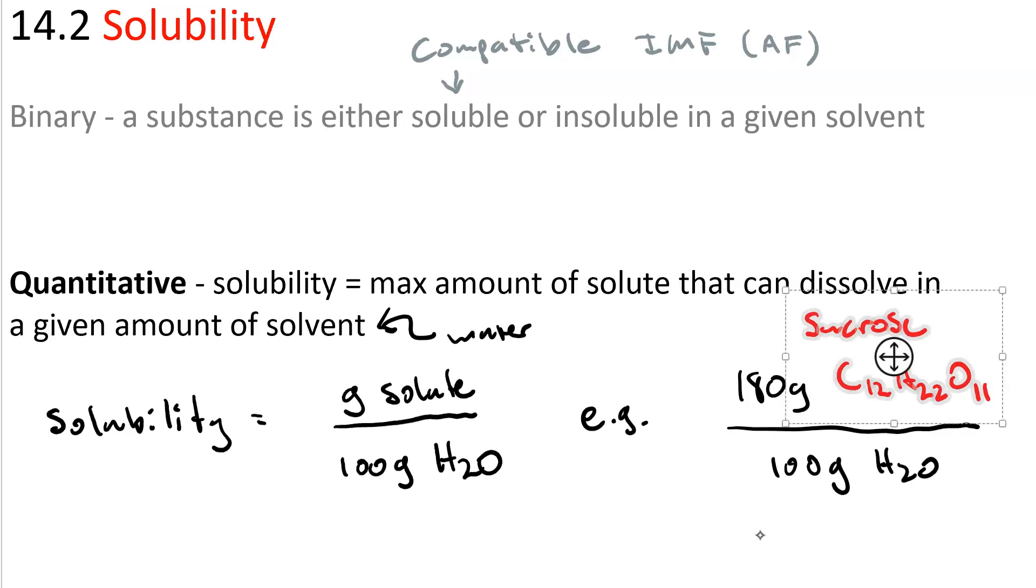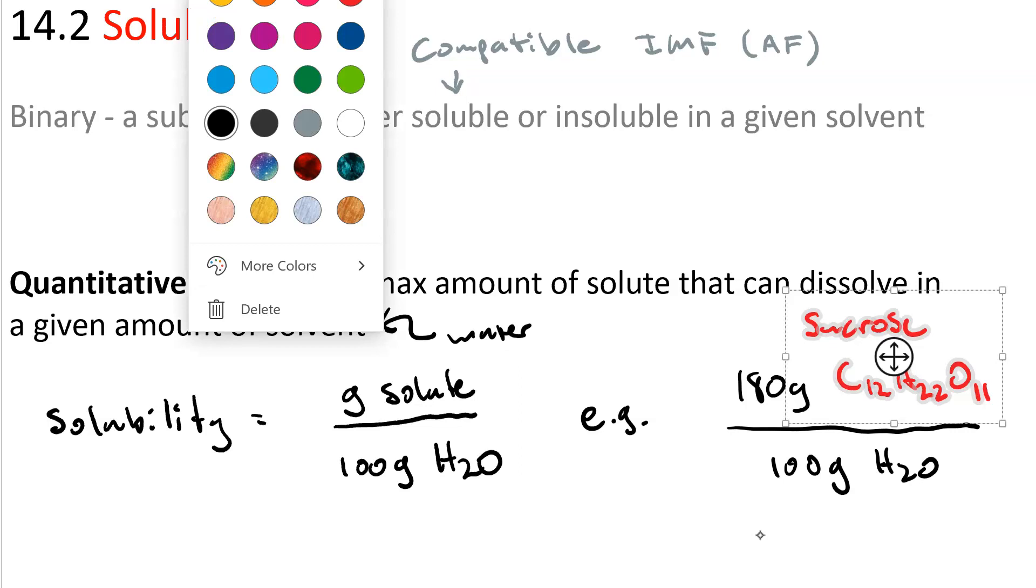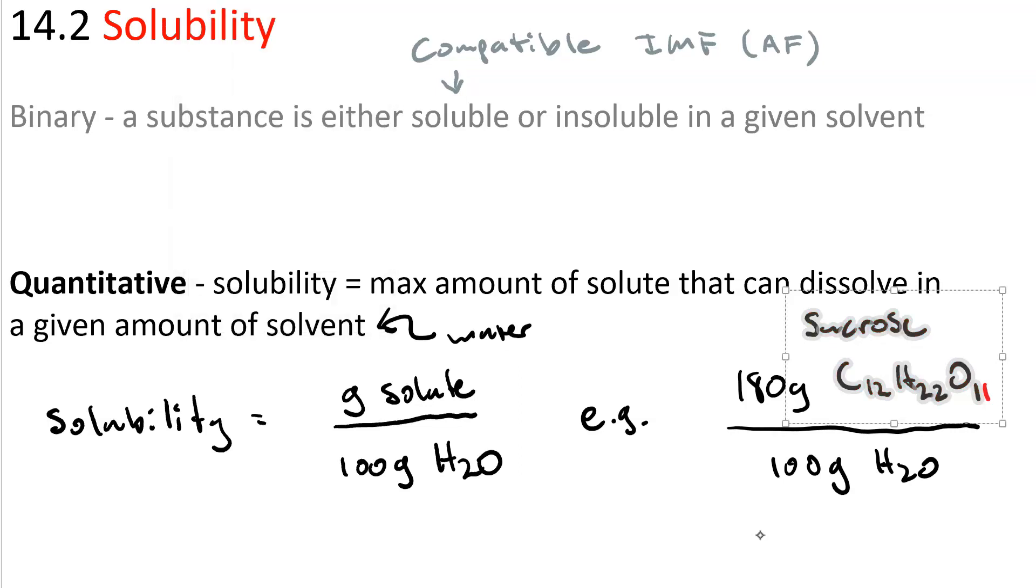It has a chemical formula of C12H22O11. Anyway, sucrose is very soluble in water because it also can form lots of hydrogen bonds. So the solubility of sucrose is 180 grams per 100 grams of water. Sucrose is very soluble.